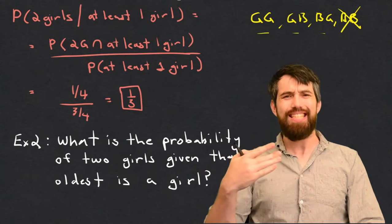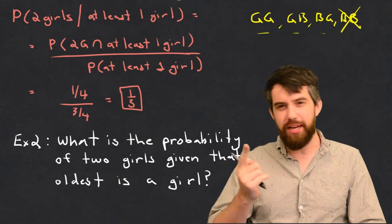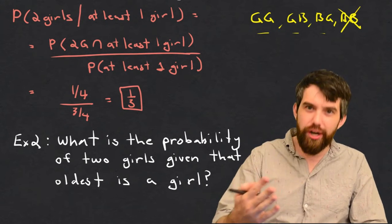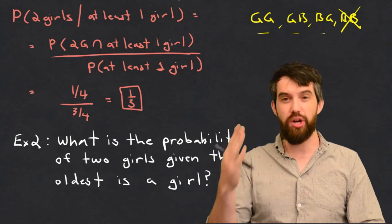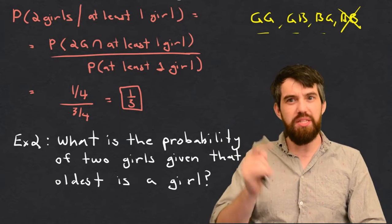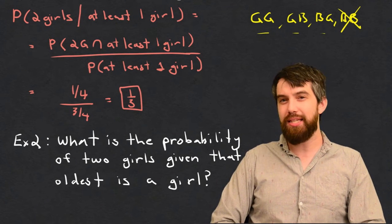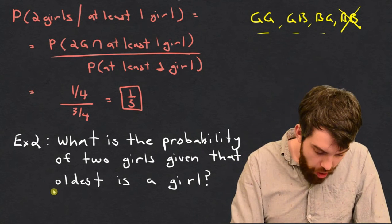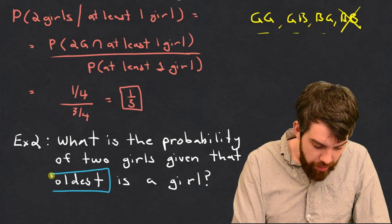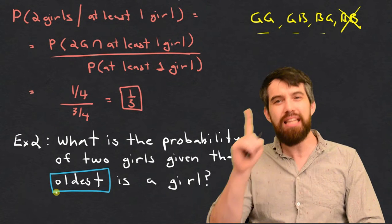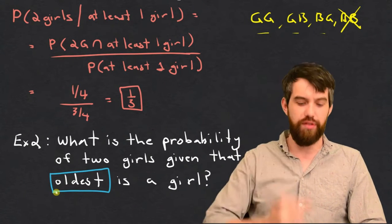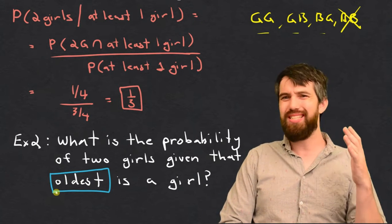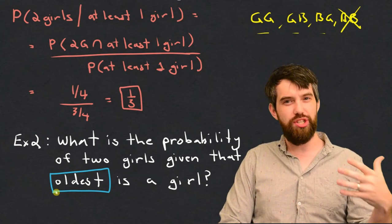Now I have a second example, and I want you to know it is very slightly different. We're again asking: if a couple has two children, what is the probability that both children are girls? But in this case, the extra piece of information is not just that at least one of them is a girl — it's that the oldest child is a girl. Does adding the word 'oldest' change things?